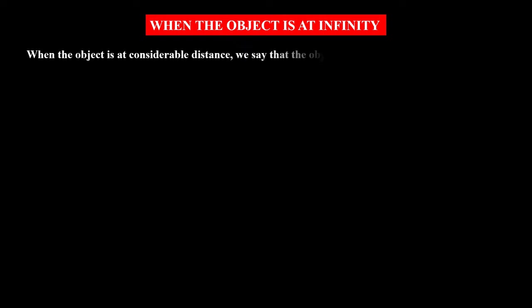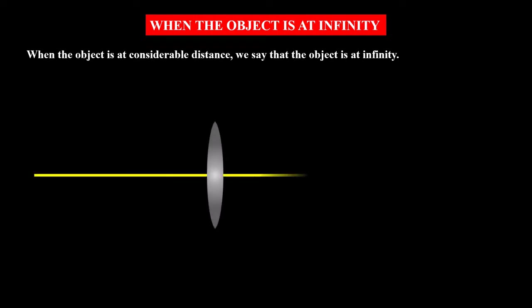When the object is at considerable distance, we say that the object is at infinity. Let this be the lens and the principal axis, and the points on the principal axis are f1, f2, 2f1, and 2f2.